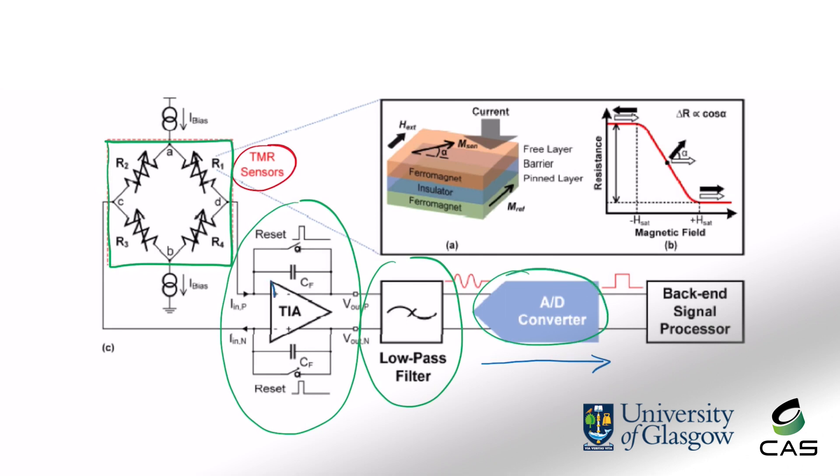The function of the trans-impedance amplifier can not only amplify small signals but also convert current to voltage. After the analog to digital converter, the final signals are collected at the back-end signal processor for pre-processing.